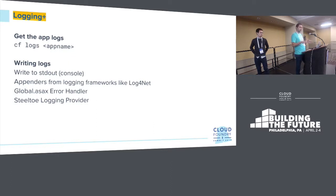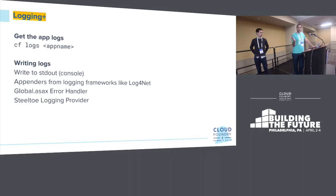CF logs works just like anything else — Java app, .NET app, it doesn't matter; you have CF logs available to you. However, you do have to make some changes to your application. You need to make sure you're writing to standard out or standard error. If you're already using a logging framework like log4net or Serilog, that means changing the appenders to target the console so that logs show up automatically in Cloud Foundry.